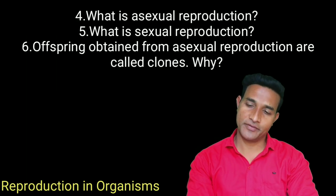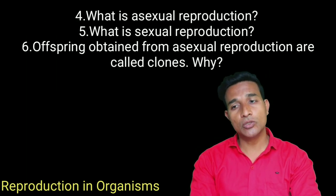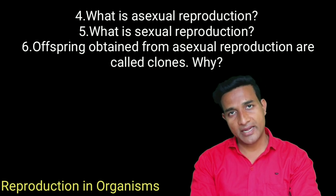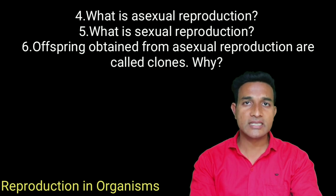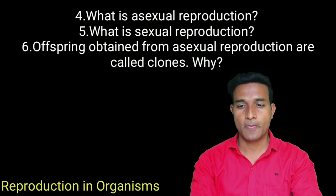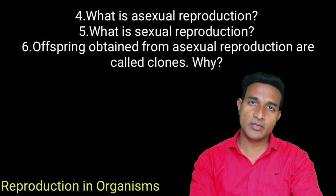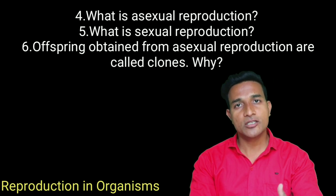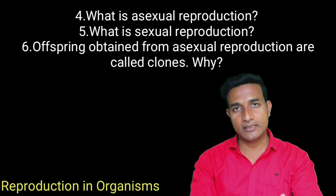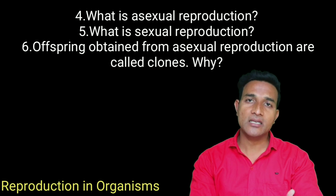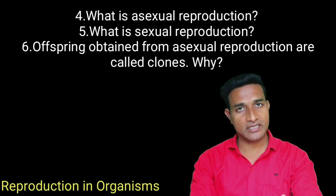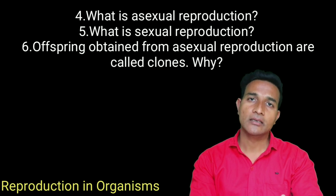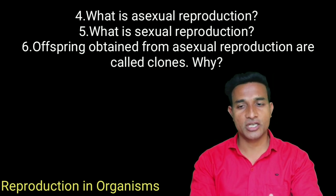What is asexual reproduction? When offspring is produced by a single parent with or without formation of gametes, it is called asexual reproduction. What is sexual reproduction? When two parents of opposite sex participate in the reproduction process by formation of gametes, it is called sexual reproduction.